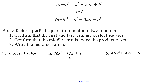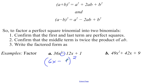So let's give this a shot. Following our steps, confirm that the first and last terms are perfect squares. In this case, the first term's perfect square is 6x, and the last term is 1. Because we have a minus here, this should be a minus. We also need to make sure the middle term is twice the product of a and b. Here a is 6x, b is 1; multiplied together we get 6x, then doubled gives 12x — and it does work. So that is our factored form.